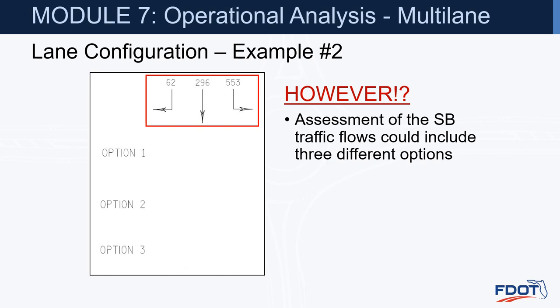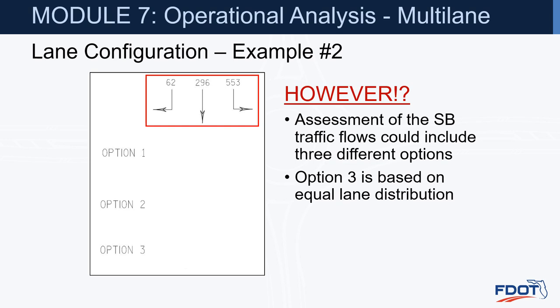However, this assessment of southbound traffic flows could include three different options. Option three is based on equal lane distribution. Option one is a typical lane configuration with a through-left and a through-right. Option two would be a left-only and then a through-right. Operationally you'd want to investigate which one works best, but in addition to operations, there are other factors to consider.